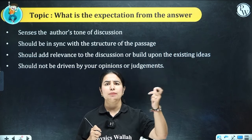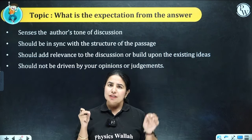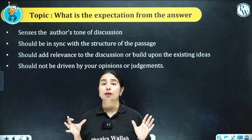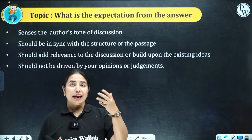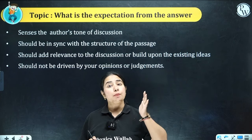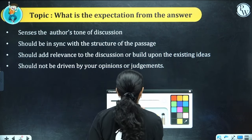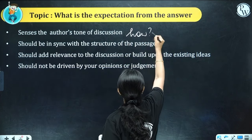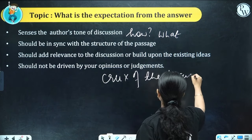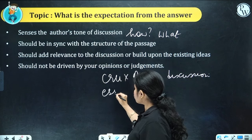Whether you talk about sentence completion, para-completion, parajumbles, or reading comprehension — in all these questions there is one common thing. They are trying to understand your awareness and clarity of the information provided to you. It is suggested that you know the tone of discussion, meaning how the author has written the argument. Unless you are clear with how the author has written the argument and what perspective the author is trying to establish, most probably you will be confused. So always focus on the essence — what is the overall story.